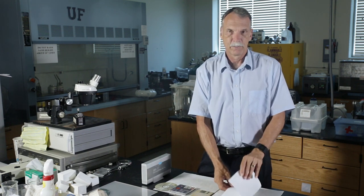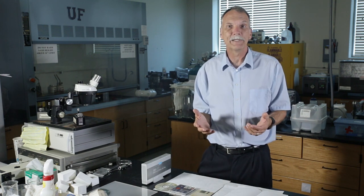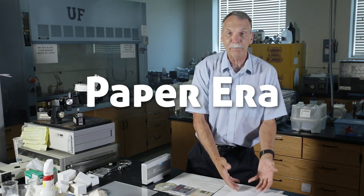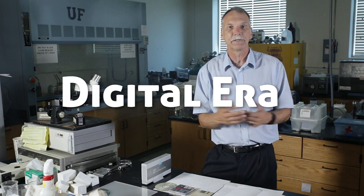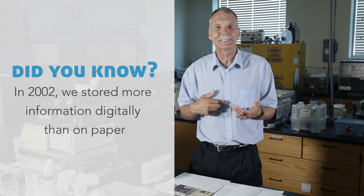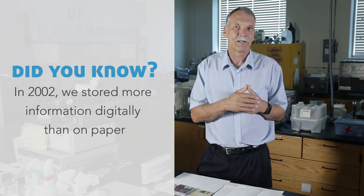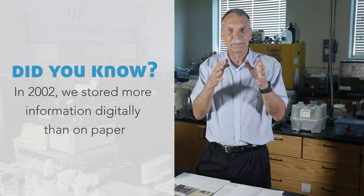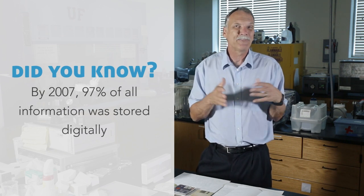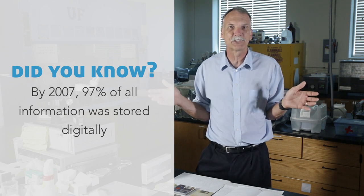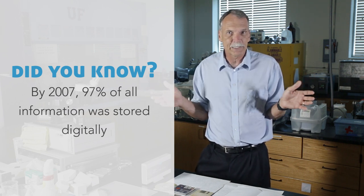We have, of course, evolved more recently into other means of storing information. We have moved from what you might call a paper era into a digital era. In 2002 was the first year where we actually stored more information as a species digitally than we did on paper. That was the transition point, and by 2007, 97% of all information was stored digitally. At that point it was only 300 exabytes of data. Now it's much larger because it doubles every three years.